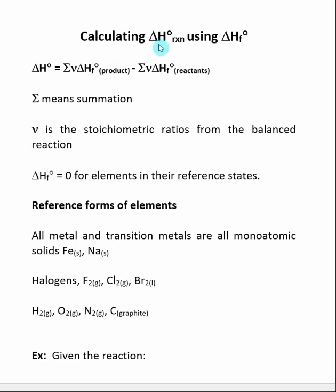In this section, we're going to look at how we can calculate the delta H naught of a given reaction by using the delta H formations of the reactants and products.